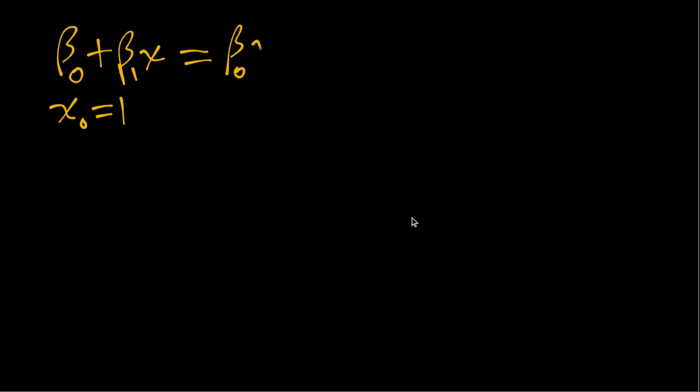So we can write this as beta naught x naught plus beta one x. Now if we first think about, is this linear in parameters? I'll write that out, linear in parameters.